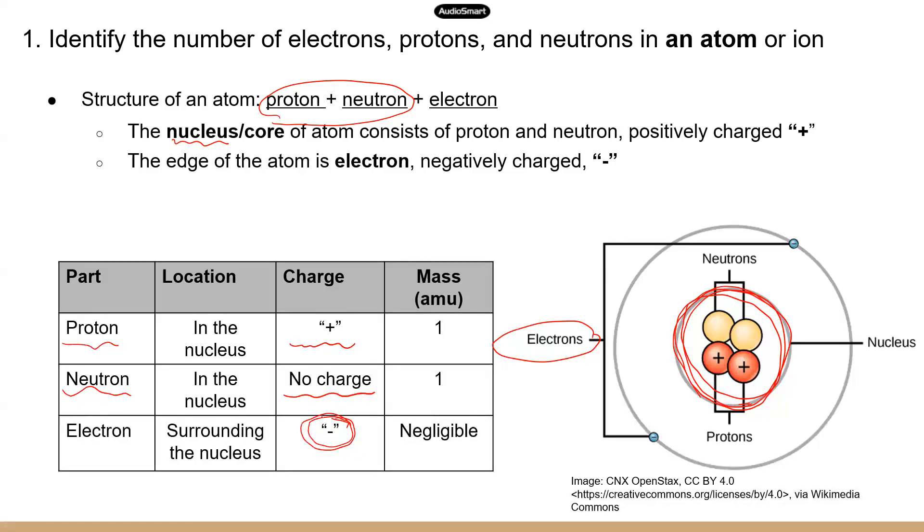But electrons are very small, so they don't carry any weight. So the weight is negligible. But protons and neutrons are a lot bigger. So each proton or each neutron will carry one atomic weight. Now, it's almost a unit less, right? It doesn't have any units. So it's just one for proton and neutron.